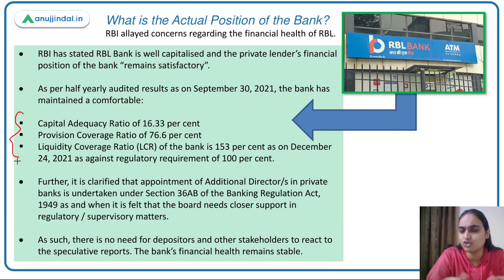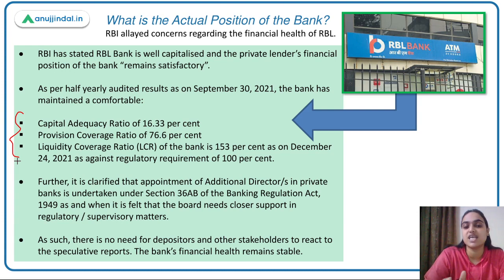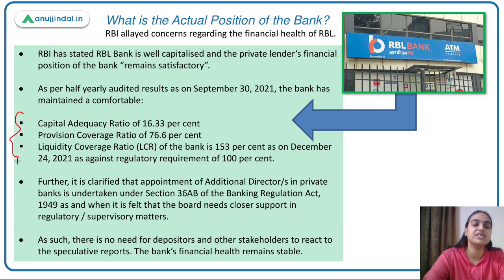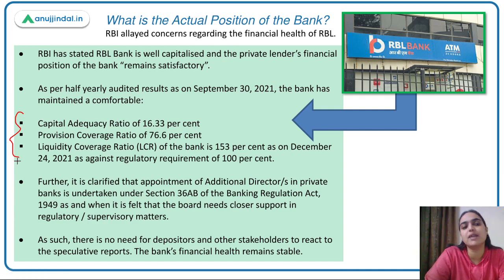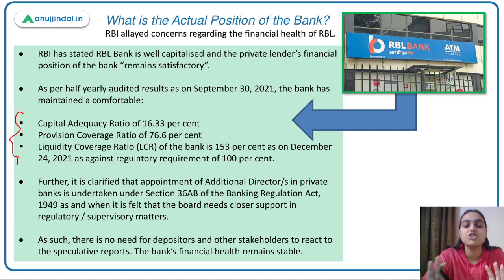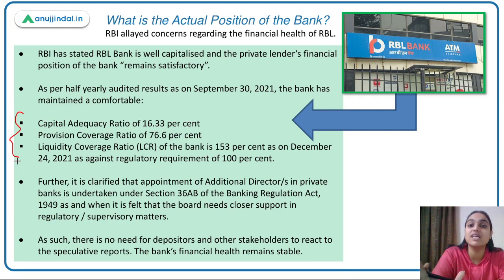Regarding the appointment of an additional director: Section 36AB of the Banking Regulation Act says RBI can appoint an additional director to private banks when it feels the board needs more support in regulatory and supervisory matters. That is the legal basis for this appointment to RBL Bank. RBI has now cleared all speculations — the financial health of the bank remains stable.